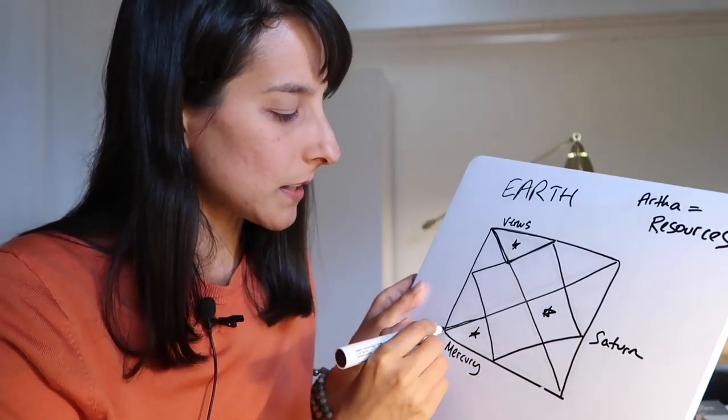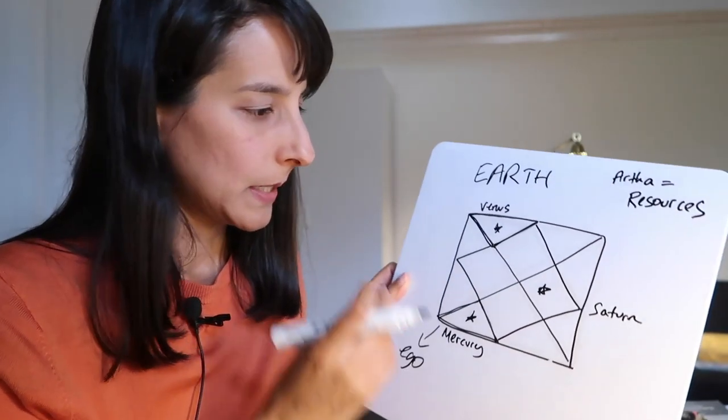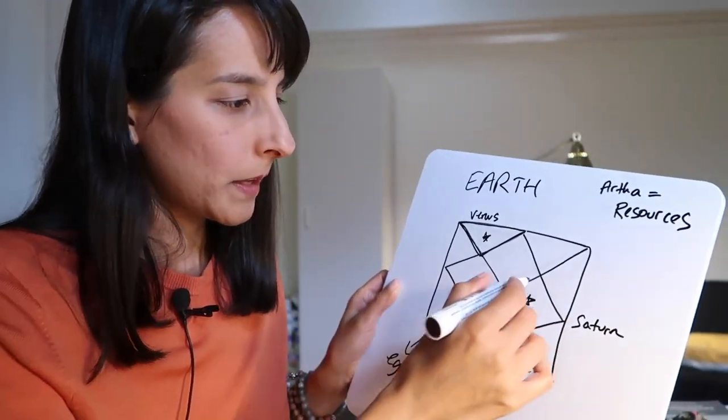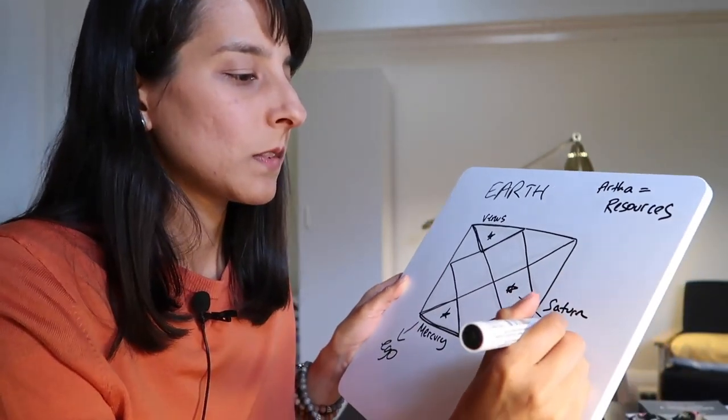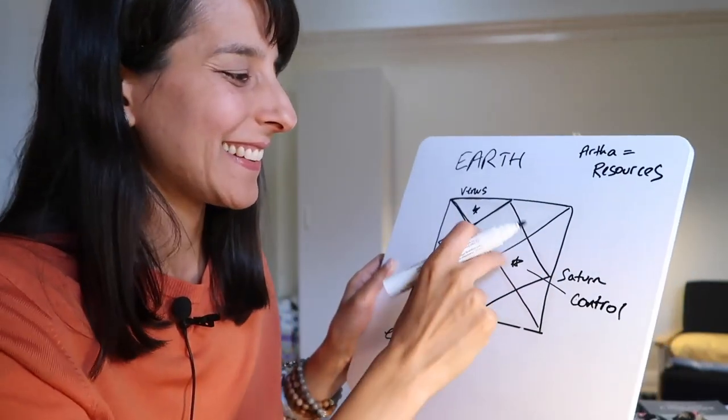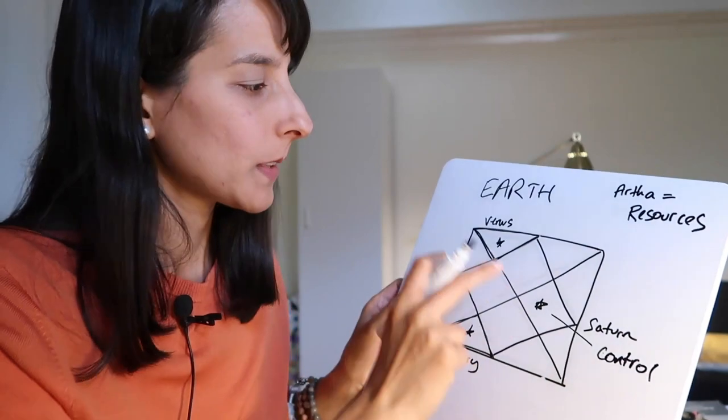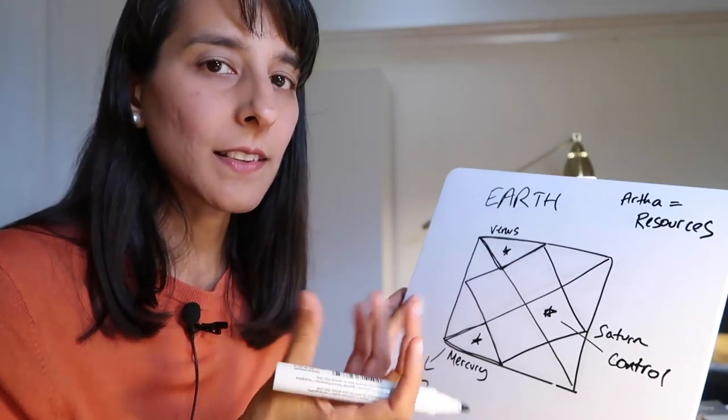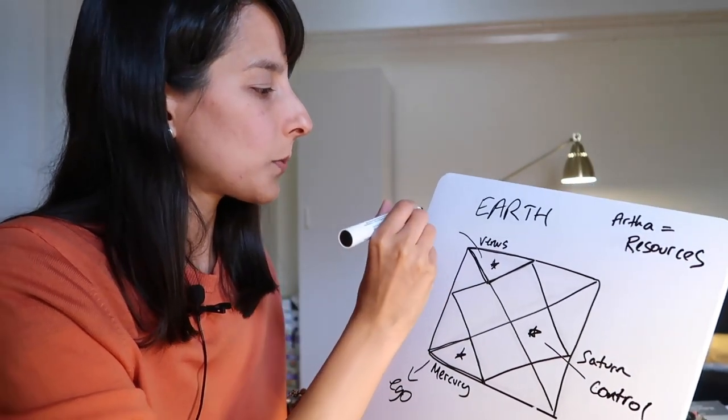Earth represents the greatest illusion in the chart. I said about the tenth house that it's the height of ego—I'll put a link to that video. What would the tenth house be? The height of control. We're seeing that now. We've got Saturn in this house, in Capricorn, and it's definitely all about control.